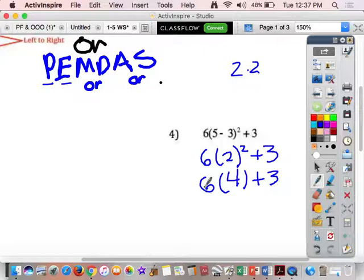And, we talked about when we have a parentheses with a number right next to it, it's multiplication. So, next thing is, do we have any multiplication or division? Yes, we do. 6 times 4, 24. I'm rewriting it every time. Don't even try not to rewrite it.